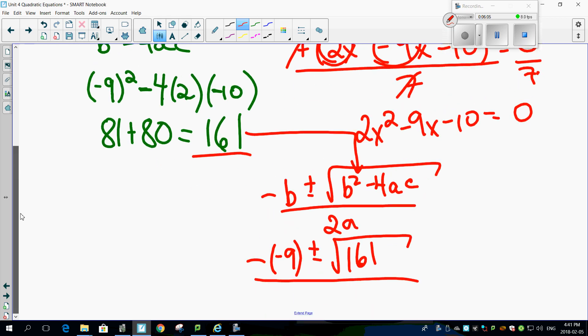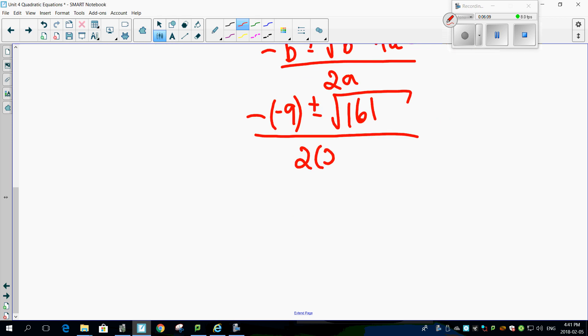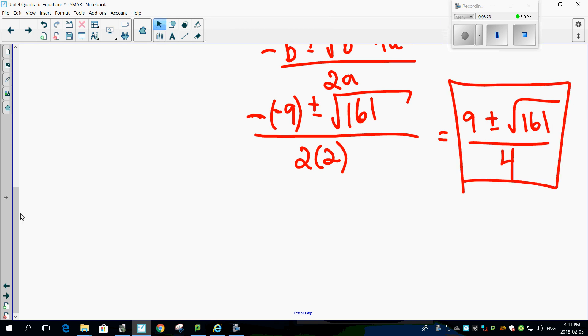So here we go. 2 times A. 2 times A. So you get, look at this, minus minus gives you a 9, plus or minus the square root of 161 over 4. That is your answer, and you are done. So a couple different things to look at, and you can see the power of the discriminant.